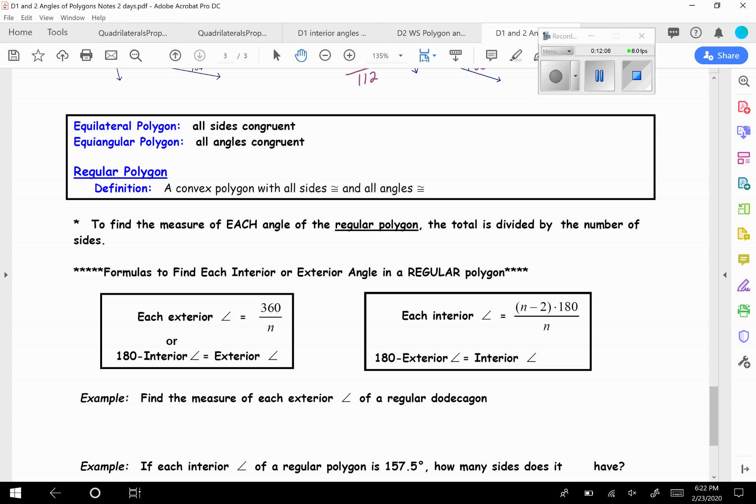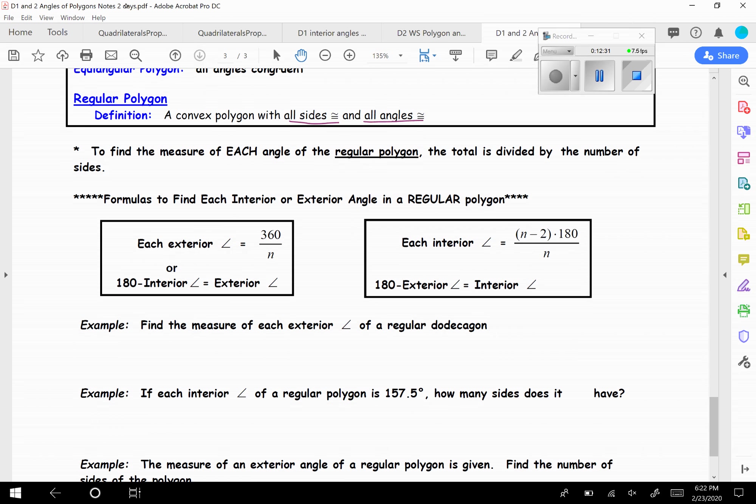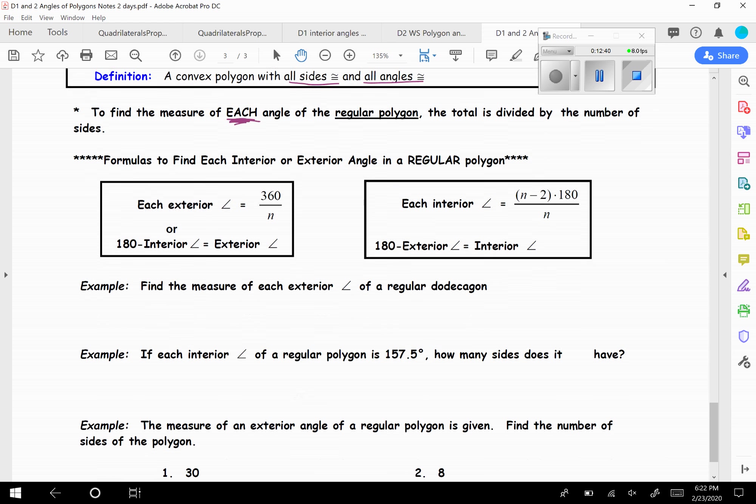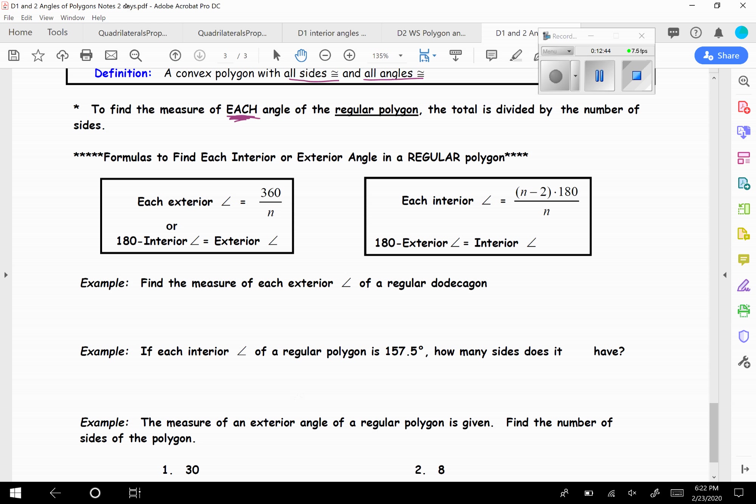So next bit of information here. It's called a regular polygon. A regular polygon is an equilateral polygon and also an equiangular polygon. So that means all the sides are congruent, that's equilateral. And all of the angles are congruent, that's equiangular. So that's what a regular polygon is. All sides congruent and all your angles congruent. So to find the measure of each angle, so this is like if I want to know just one of the regular polygon, you have to take the total and you divide it by the number of sides.